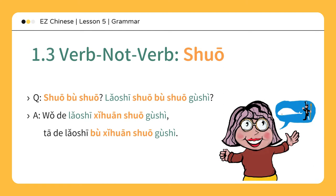说不说。 老师说不说故事？ Does the teacher tell stories? 我的老师喜欢说故事，他的老师不喜欢说故事。 My teacher likes telling stories; his teacher doesn't like telling stories.